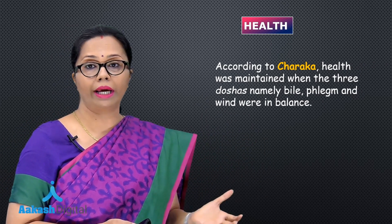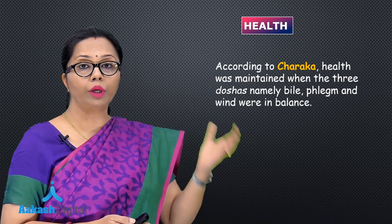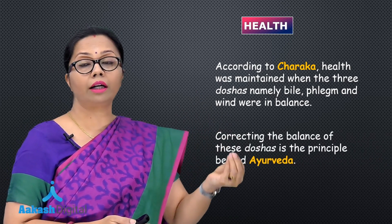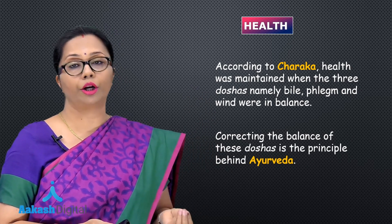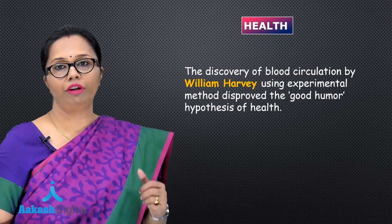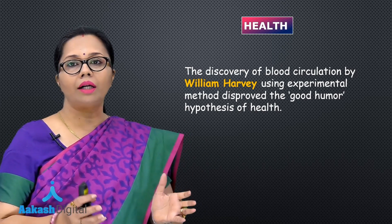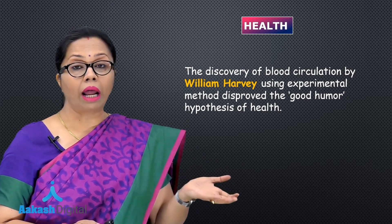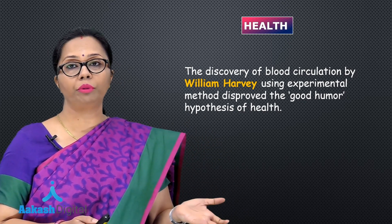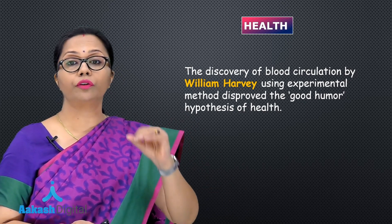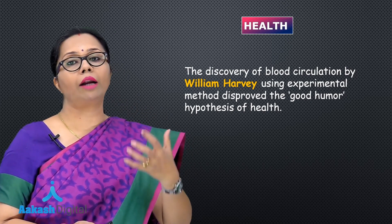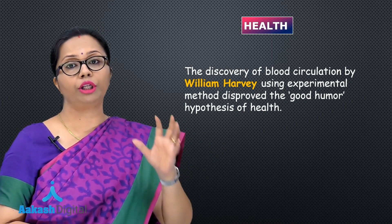Back home, Charak had a similar connotation about health. According to him, there are three things in the body — bile, phlegm, and wind — and these have to be in proper balance. This is the basic premise behind our Indian system of medicine, Ayurveda. With the discovery of blood circulation by William Harvey, using various experimental methods, the good humor and bad humor hypothesis was discarded. We now know there is nothing like black bile in the body; yellow bile refers to the bile juice produced by the liver, phlegm is the mucus released when we cough, and blood is the main circulating fluid. This humor theory has been totally disproved.